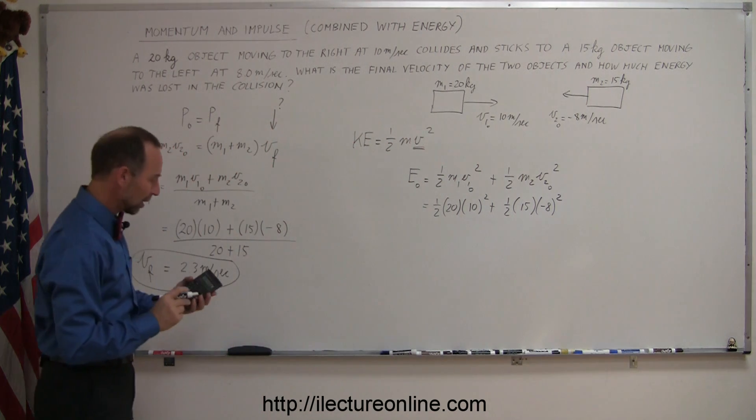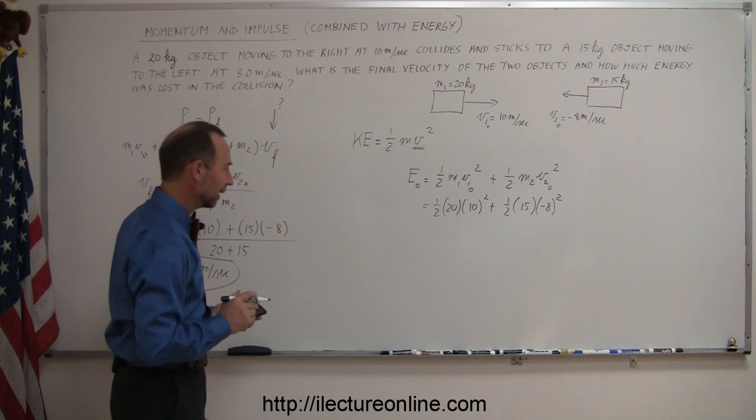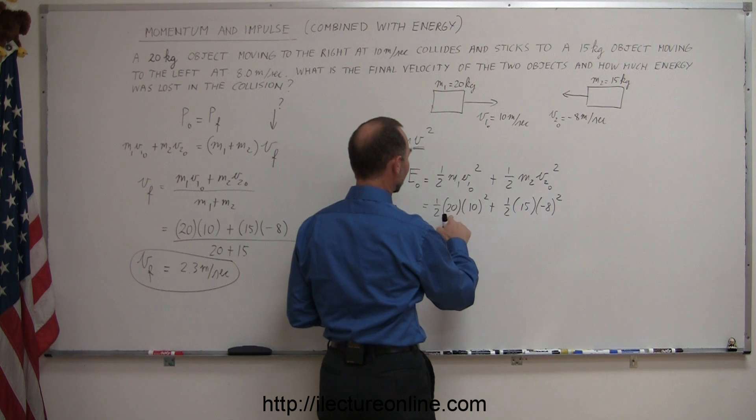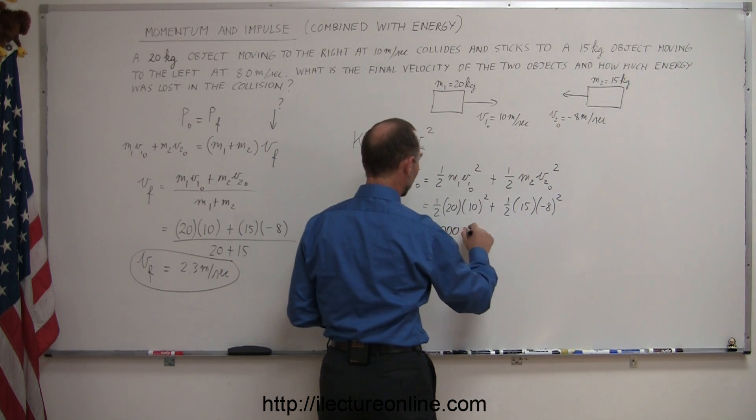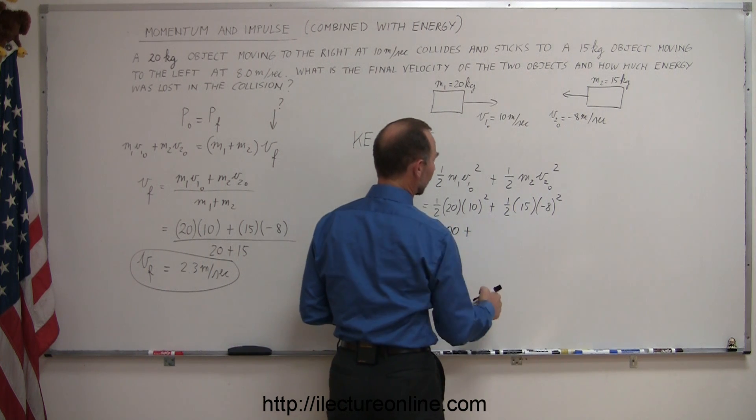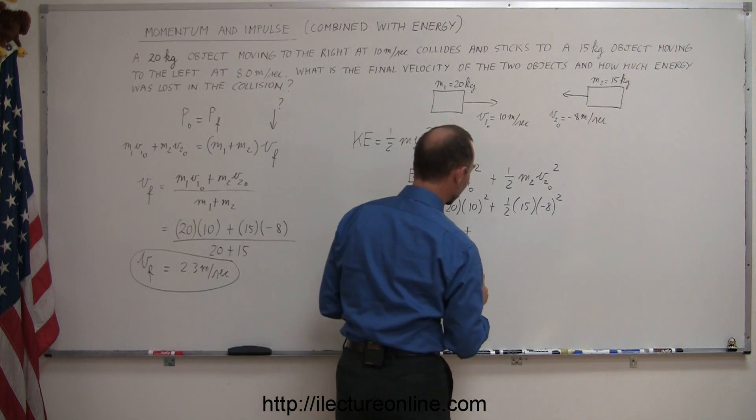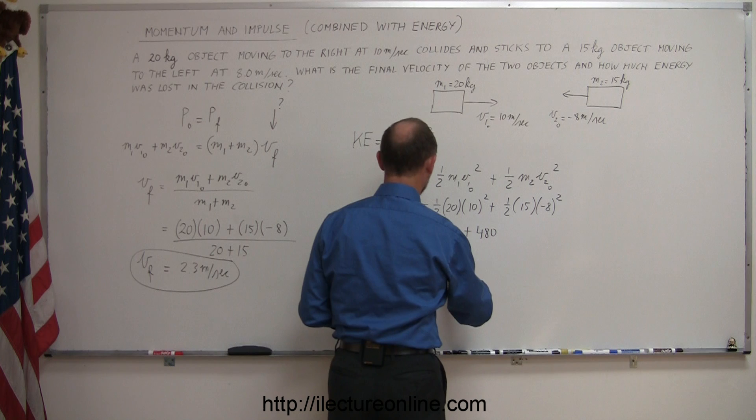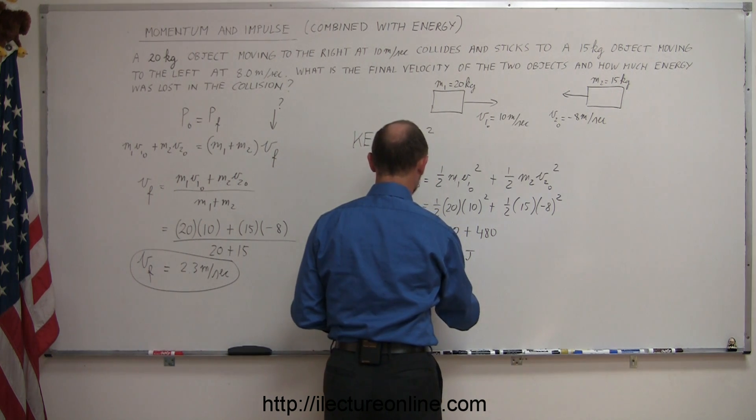So let's find out how much energy we got. Maybe we can simplify this a little bit without using a calculator. That's 100, and one-half times 20 is 10, 100 times 10 is 1,000, so this is 1,000 plus 8 squared is 64 times, well, that's 32, that's 320, that looks like it's 480, and so that would be equal to 1,480 joules. That would be our initial energy.